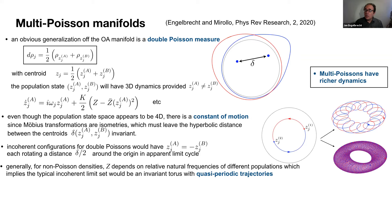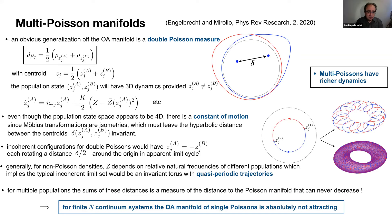So the first point is that extending off the OA manifold going to a double Poisson density immediately gives you new and richer behavior. Additionally, there are constants of motion. And so there is no way that a double humped density, at least Poisson density, can relax to a single uniform density. And so there is a distance that cannot approach the OA manifold. So the OA manifold is not attracting.